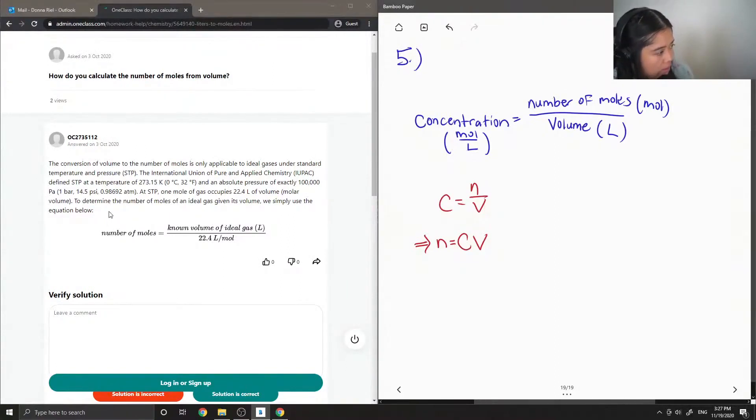To determine the number of moles of an ideal gas given its volume, we simply use the equation below.